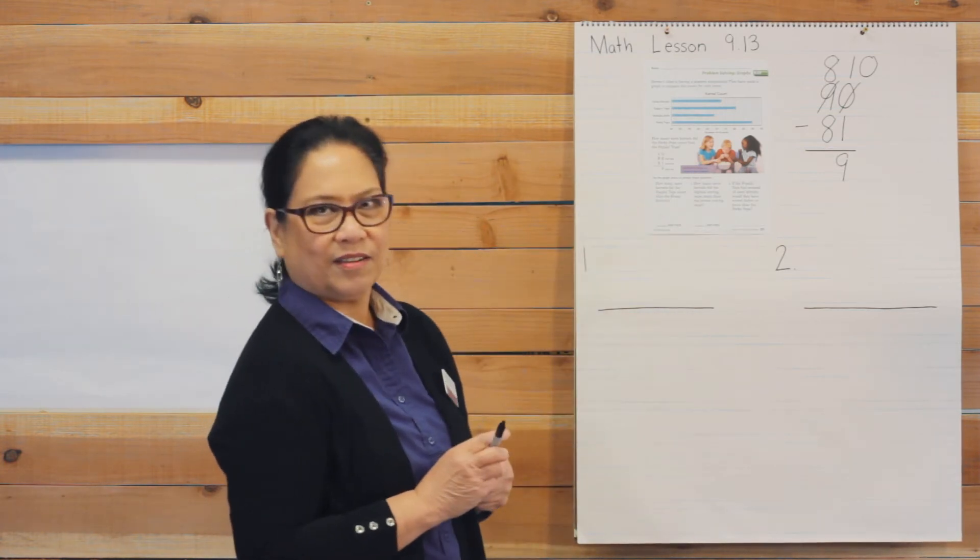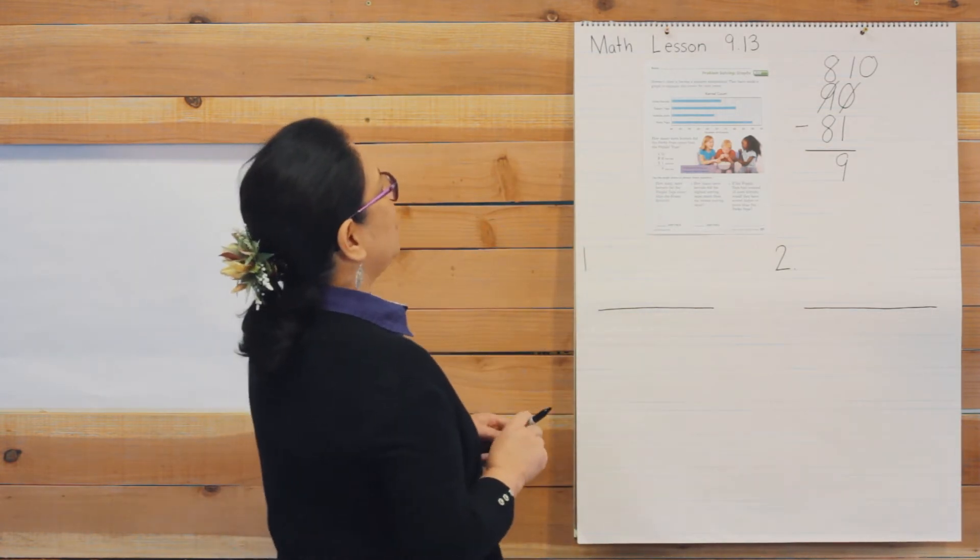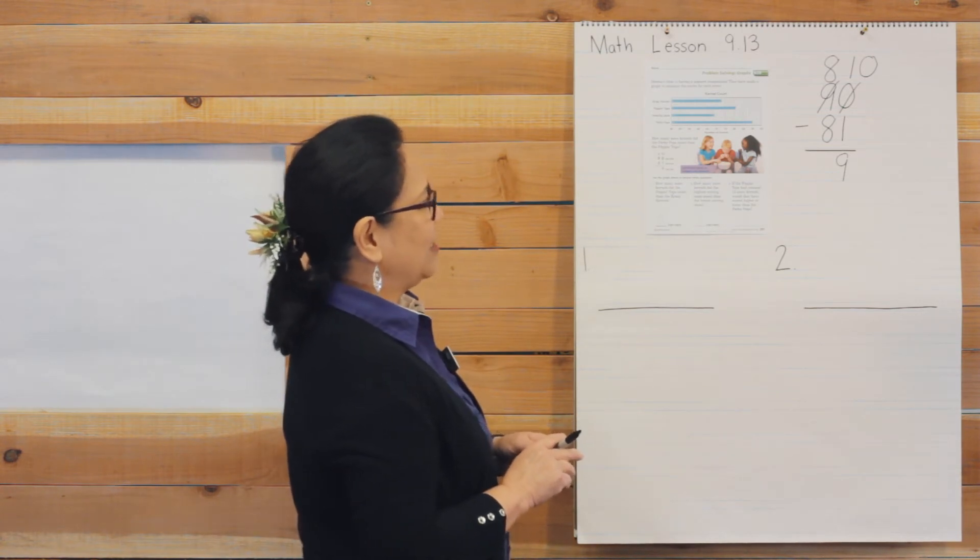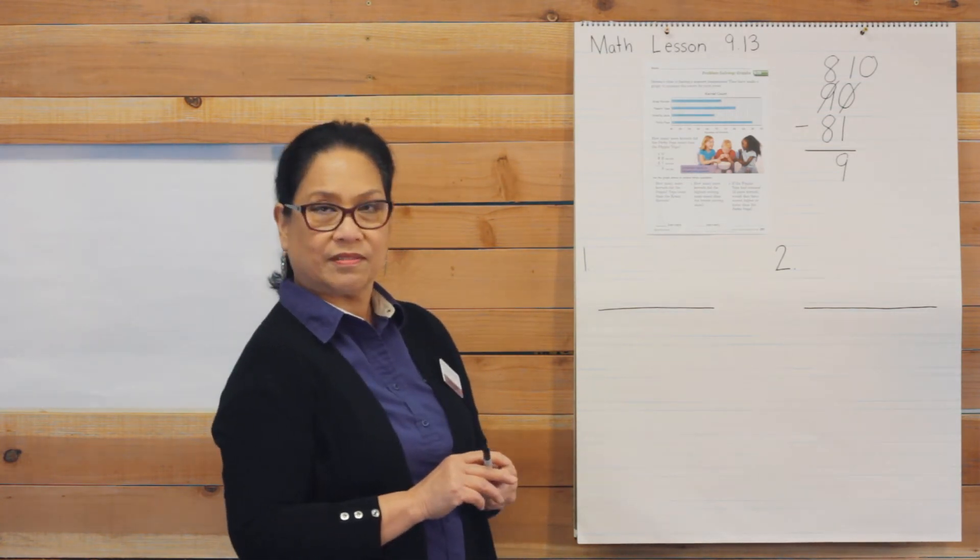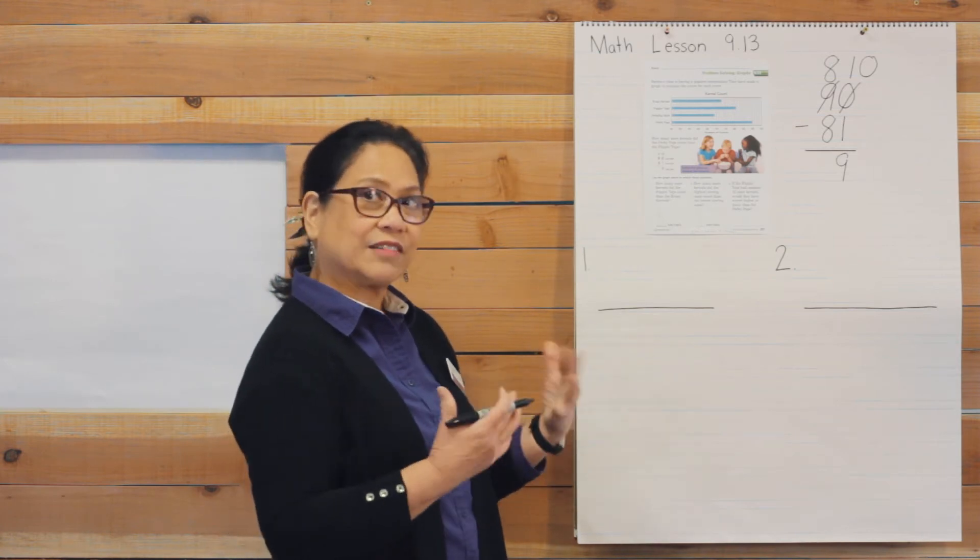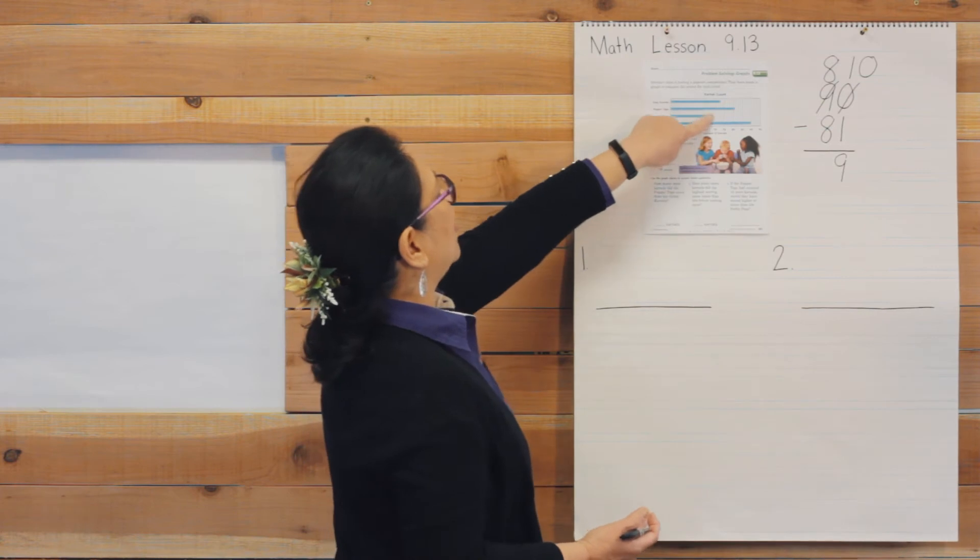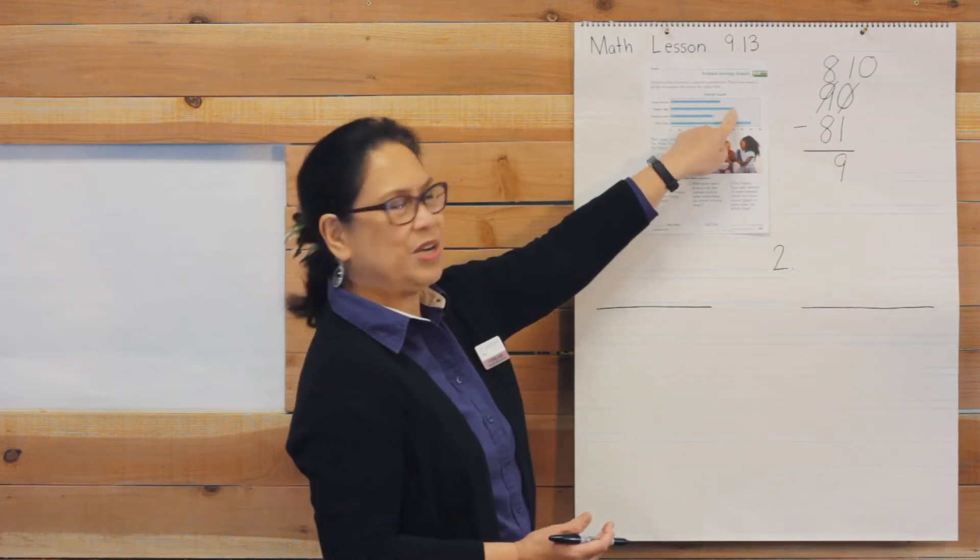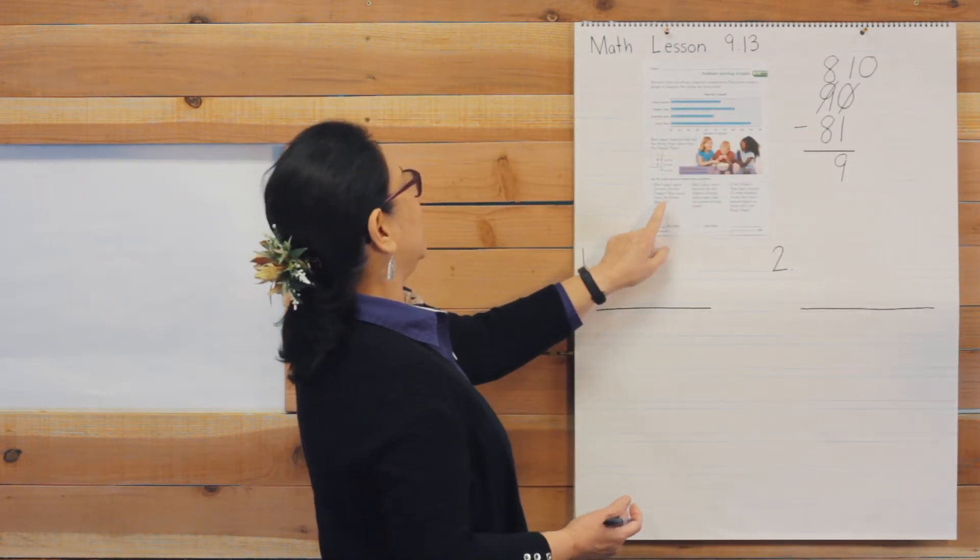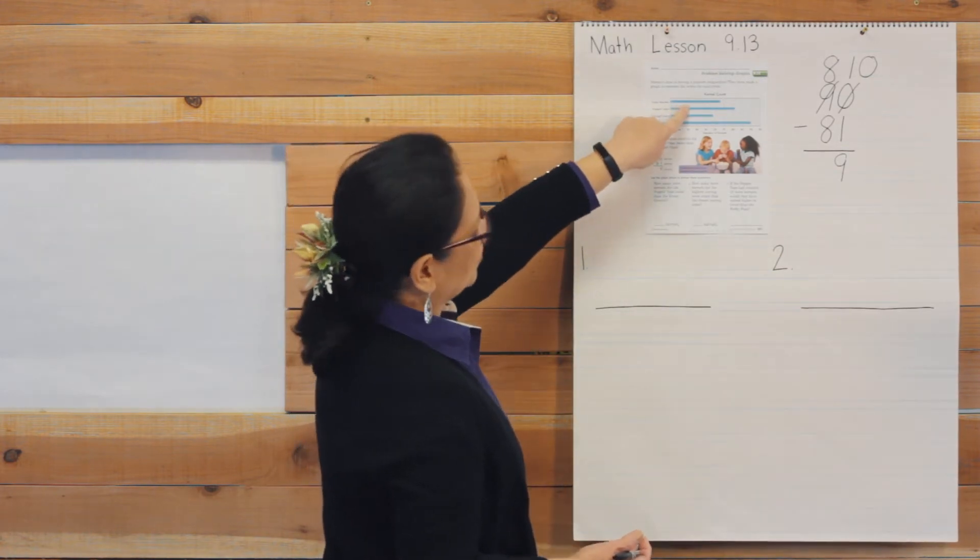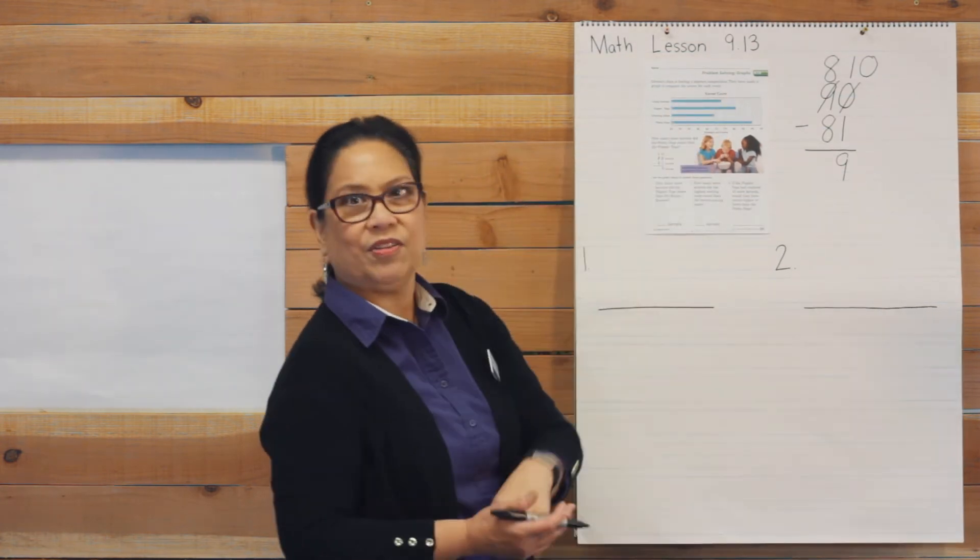First question. How many more kernels did the popping tops count than the crazy kernels? So let's look at the facts first. Popping tops. They made 81, right? We know that. And then the crazy kernels made, all the way to the end, 73.